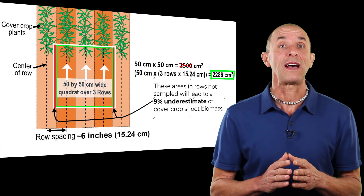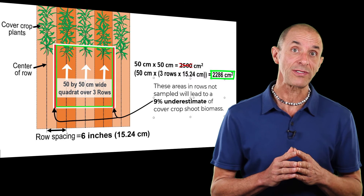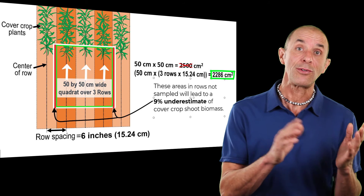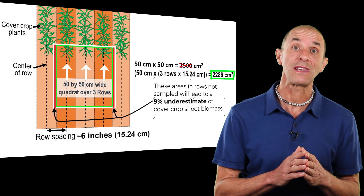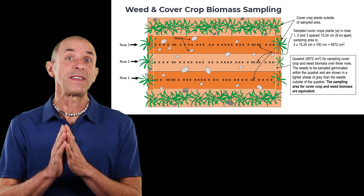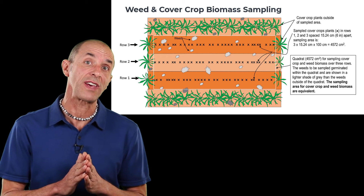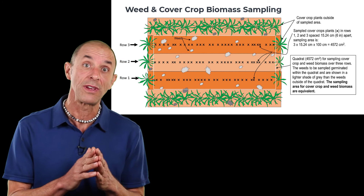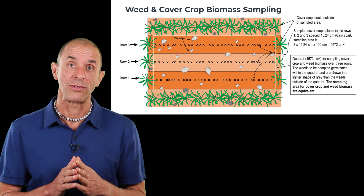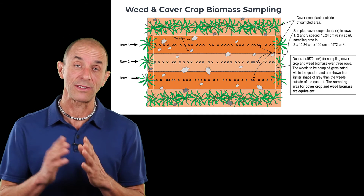My paper has lots of examples of these calculations and how this affects the accuracy of biomass sampling. The error can range from underestimating by 49% to overestimating by 27%. Things can get even more complicated if you're using quadrats to sample biomass of cover crops that occur in rows and weeds that don't occur in rows. Check out my paper for more details on that complexity.